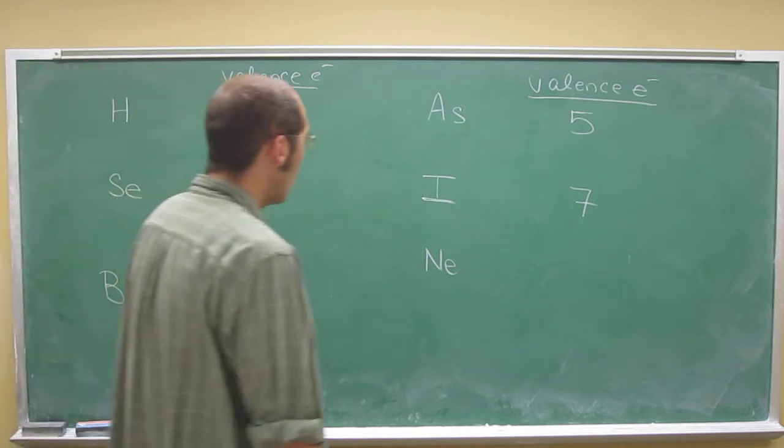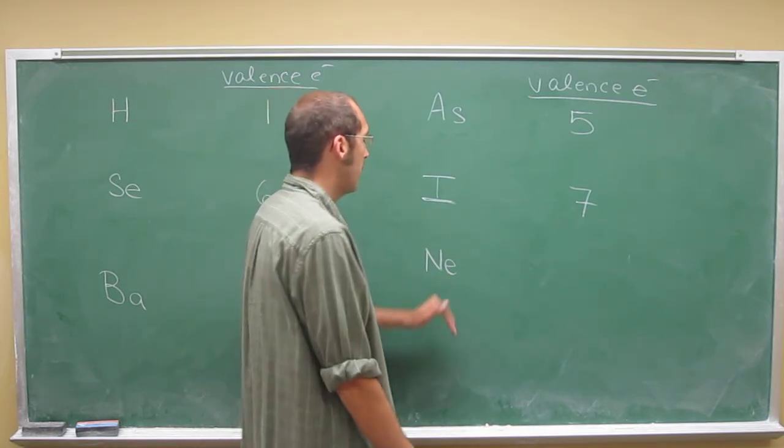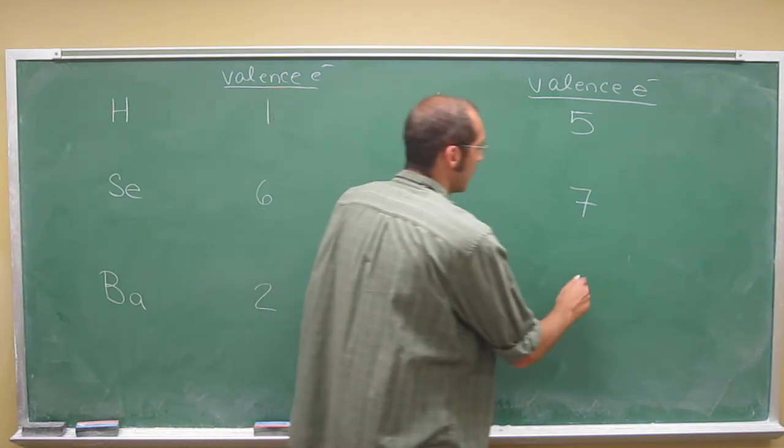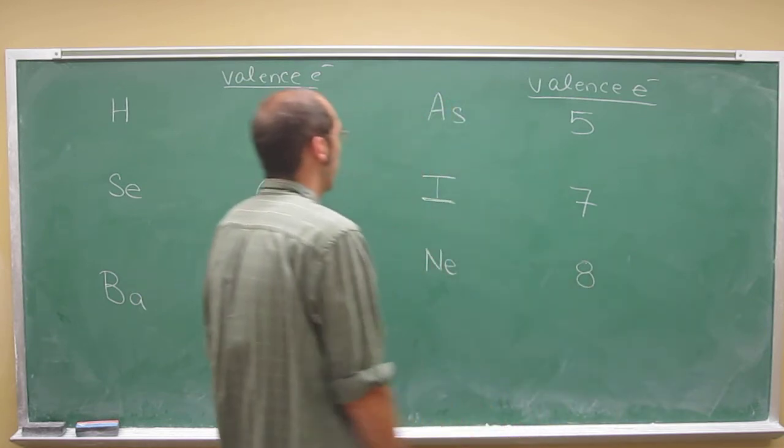And then neon gases. Neon is one of the noble gases, so it's got a full octet of eight electrons.